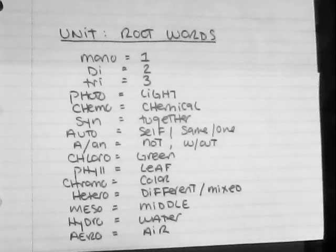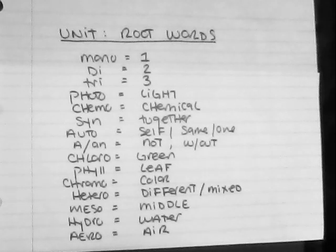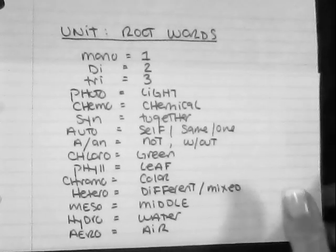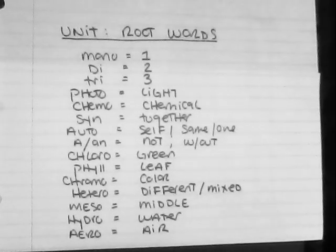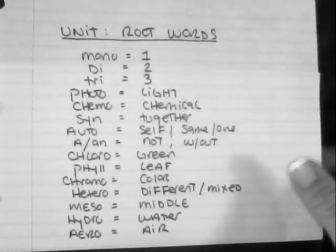Chromo means color, similar to a chromoplast. Hetero means different. Meso middle, so a mesophyll is the middle of the leaf. Hydro means water, and then aero means air. So just please make sure to write these down and refer to these because they might help you with studying.